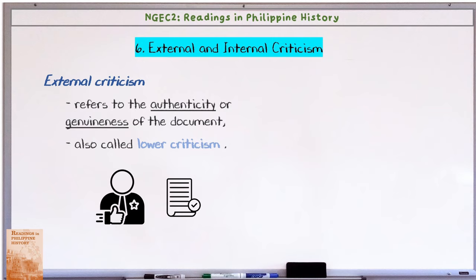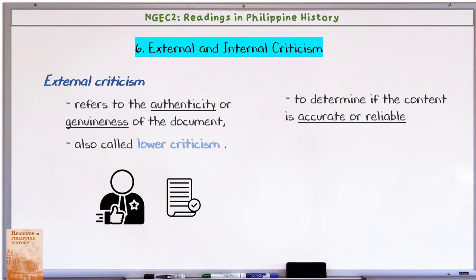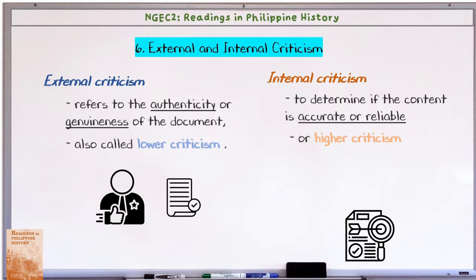External criticism checks if the document was really signed by the right person or authority — to verify if it is authentic or genuine. It is also called lower criticism. Once a document has been determined to be genuine, the researcher then needs to determine if the content is accurate or reliable by reading what is written. That is internal criticism, or higher criticism, since it deals with more important matters than external form.